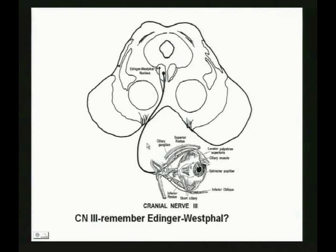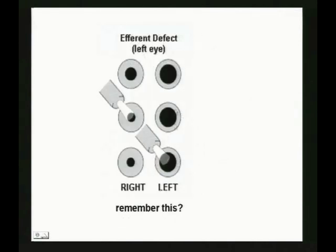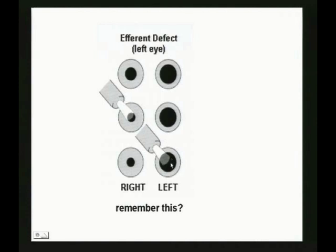From the vision lectures: we have a dilated pupil in the left eye and a regular-sized pupil in the right. Since we have a lesion of cranial nerve 3 on the left, this is an efferent pupil — there's no way this pupil will constrict. If you shine light in the bad eye, that eye won't constrict. If you put light in the other eye, the good eye will constrict. Classic efferent pupil, cranial nerve 3.